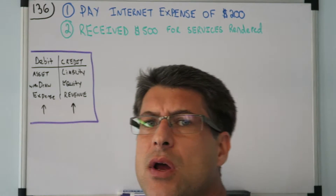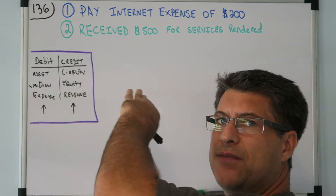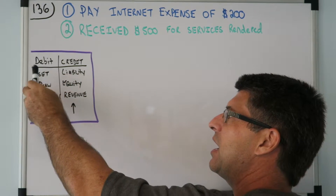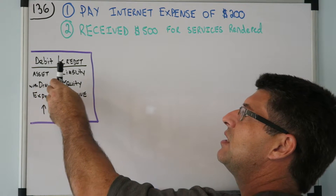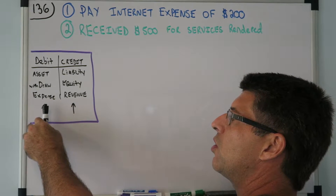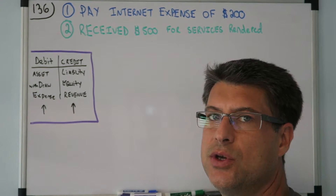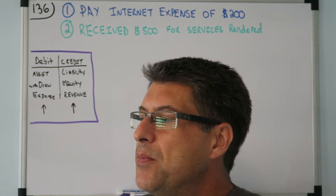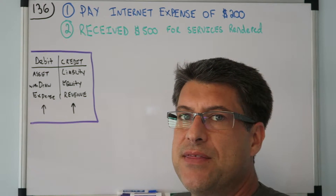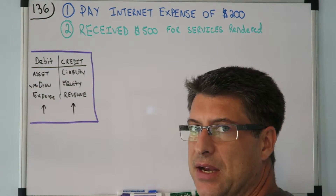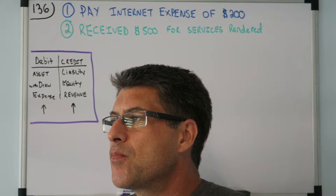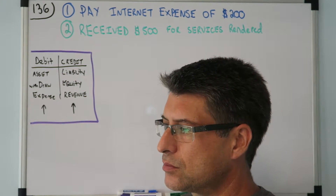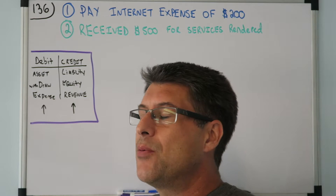We've got DC ADE/LER. If this is your first video or you've seen a few, you might know this: Debit, Credit — Asset, Withdrawal/Draw, Expense, Liability, Equity, Revenue. These are the normal balances when accounts are increasing. People ask: if an asset is decreasing, where does it go? This video covers what happens when an account is decreasing — you put it on the opposite side of DC ADE/LER.